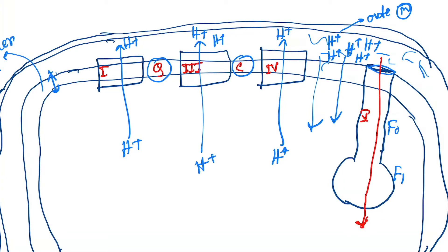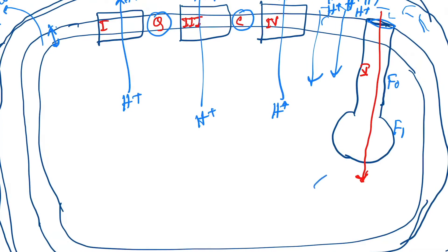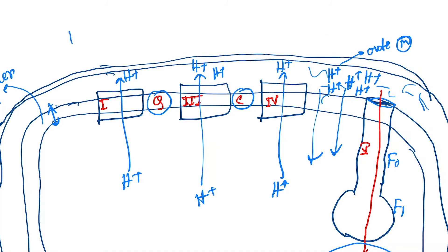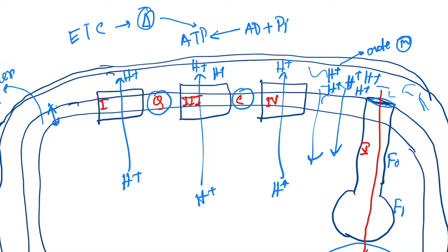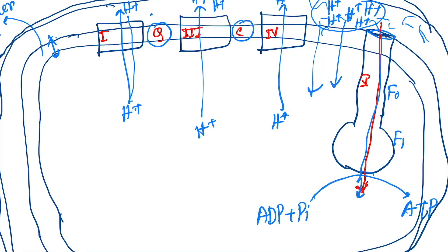Through this channel — the ATP synthase complex — the H+ will come back into the matrix, and this will cause formation of ATP from ADP and inorganic phosphate. The electron transport chain releases energy, which causes transfer of hydrogen to the intermembrane space. The hydrogen collects there, then comes back to the matrix, causing formation of ATP from ADP and inorganic phosphate. This is oxidative phosphorylation.